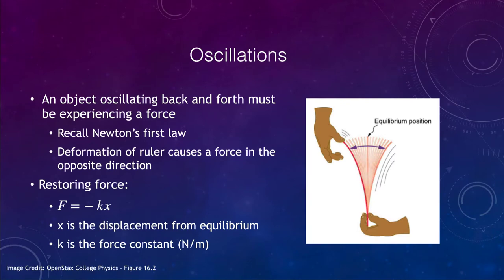An object oscillating must be experiencing a force. Anything that is oscillating, going back and forth, is not undergoing uniform straight line motion, and that is the requirement from Newton's laws for things to be undergoing a force. Remember that an object at rest remains at rest and an object in motion remains in motion in uniform straight line motion. If something is oscillating, it is going back and forth, changing its direction, and must be accelerating — therefore there must be a force.